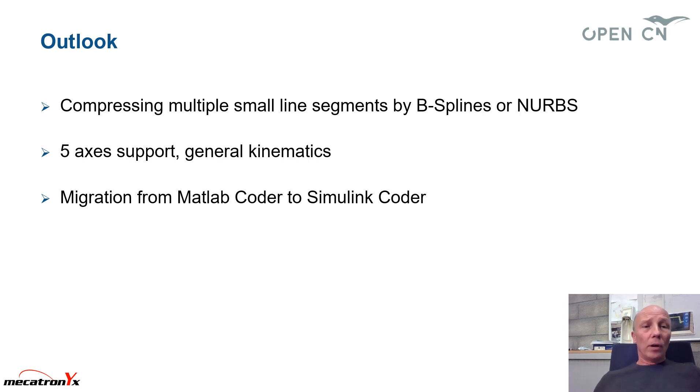I would like to finish with an outlook. Of course, there are still missing parts. In the CAD CAM program, you can have the situation where you have a large amount of very, very small G01 blocks. What we still need is a compressing of those blocks by approximating them by B splines or NURBS. By spring 2020, we will have a five axis machine here and we will tackle the general kinematics. And we also intend to migrate from MATLAB to Simulink in order to have a more comprehensible description of our algorithms.